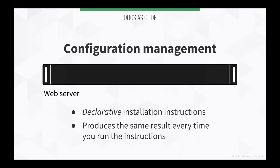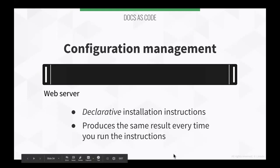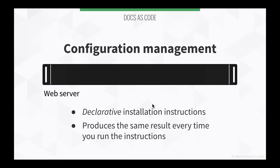Configuration management means creating declarative installation instructions where you write down the desired state of the server. Instead of saying 'install Nginx,' you say 'I want Nginx to be installed.' You write that for Git, Hugo, and everything else, then run it with a configuration management tool. The tool checks the current state of the server and only installs what's missing. If you run the formula again, it won't reinstall things already there — it produces the same result every time, removing human error.